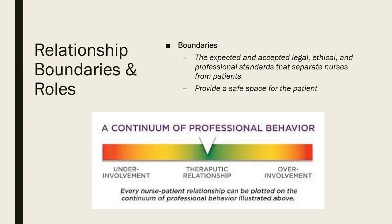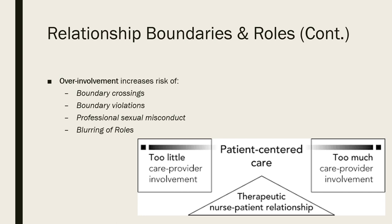Relationship boundaries and roles — boundaries can be considered the edge of professional behaviors and exist to protect the patient. Nurses are expected to maintain professional boundaries and help patients meet their goals, and never cross boundaries for the nurse's own needs being met. The expected and accepted legal, ethical, and professional standards separate nurses from patients and provide a safe space for our patients. When we think about legal boundaries, patients have the right to confidentiality. Breach of confidentiality is a common law tort — a civil wrong — which can result in a lawsuit resulting in monetary damages. Sexual misconduct violates all of those. When patient-centered care falls to too much care, over-involvement can increase the risk of boundary crossing, boundary violations, and professional sexual misconduct.